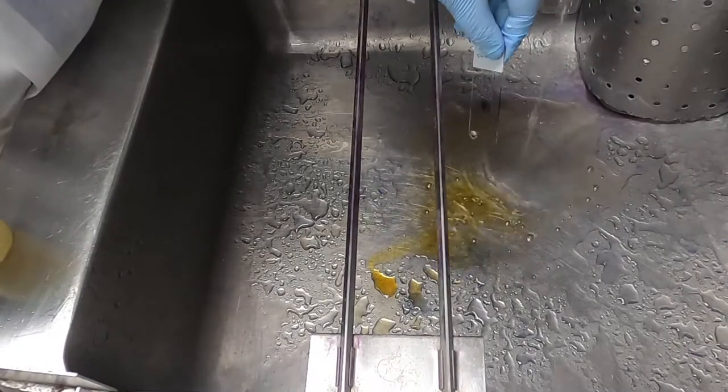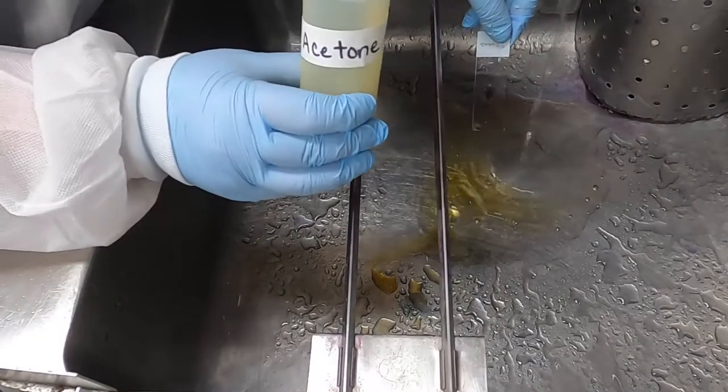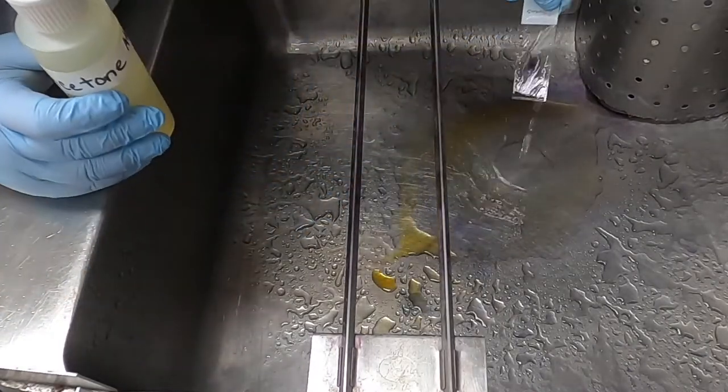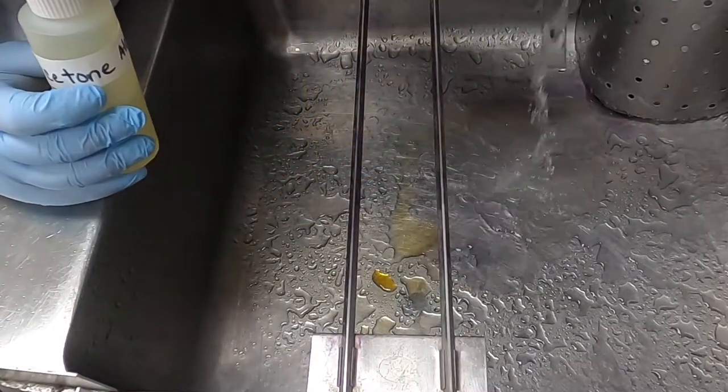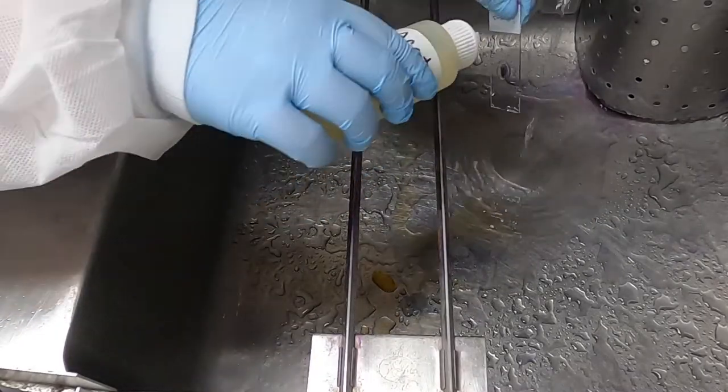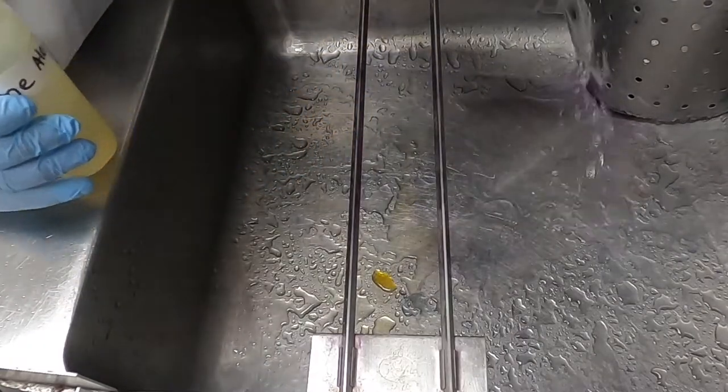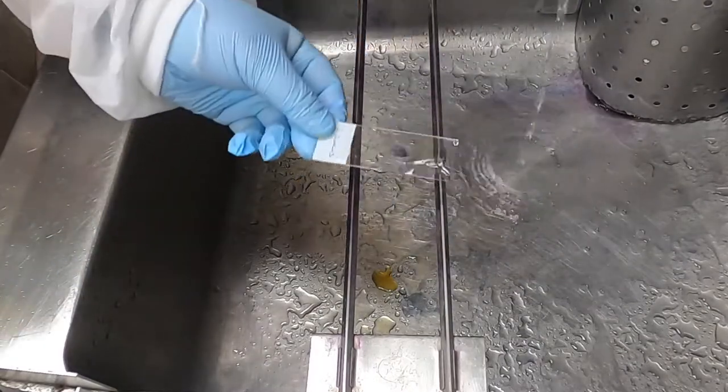Now the next step is decolorization and this is a really critical time in the Gram stain. What you want to do is flood the slide with acetone and rinse off quickly. You want to do this until the water runs clear but you have to be careful not to over decolorize your cell or Gram positive organisms can look Gram negative.